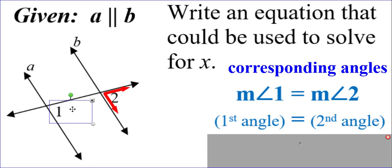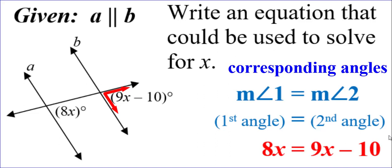So let's get rid of these temporary markers of angle 1 and angle 2, put them back to what they used to be, 8x and 9x minus 10. Again, they need to be set equal to each other because that's what corresponding angles are, congruent angles.